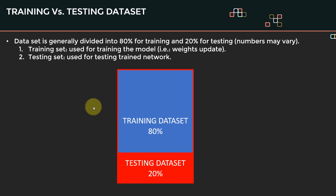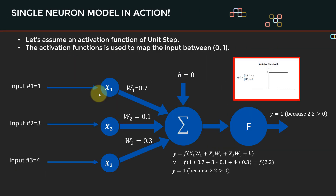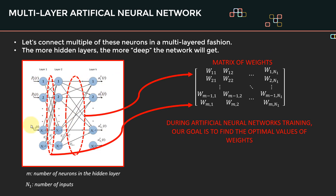In general, we collect our dataset and divide it into approximately 80 percent for training and 20 percent for testing, though these numbers may vary — for example, 75/25 is also common. The main difference is that the training data, which is the majority, is used to train the model — essentially to update the weights — as we're trying to find the optimal values of weights.